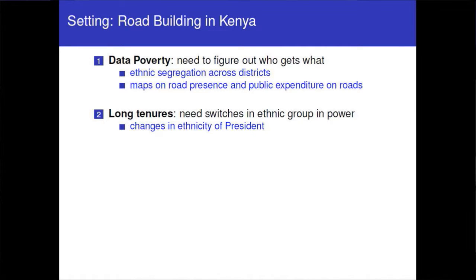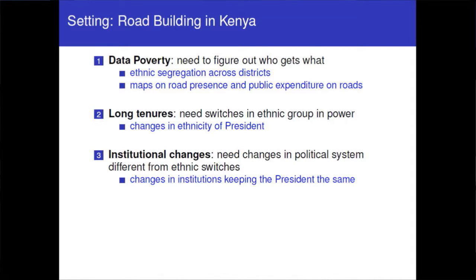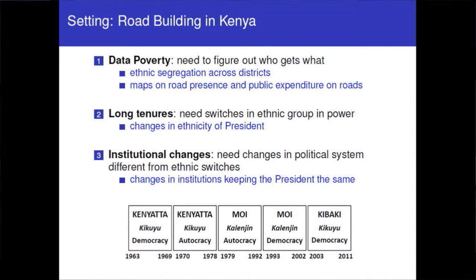Kenya's history also provides a very interesting setting about leadership. You have changes in the ethnicity of the president, and also within each president a change in institution. President Kenyatta was the first president of Kenya and died in 1978. President Moi took over for a long regime until 2002. Then Kibaki took over in 2003. The first president was a Kikuyu, the second was Kalenjin, then we had a reversion to a Kikuyu president under Kibaki. The third dimension is institutional changes: from a multi-party state to a single-party state and back to a multi-party state.